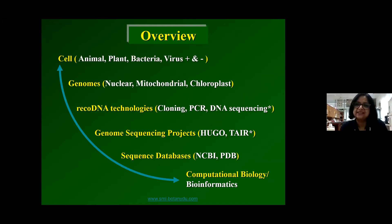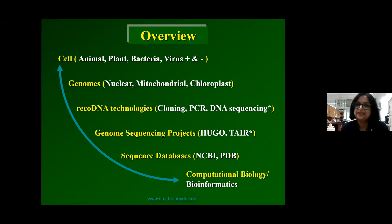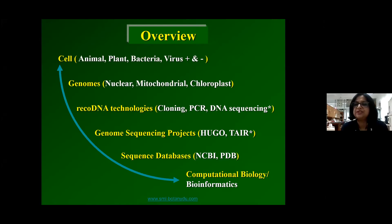Since this is a Herculean task of maintaining this large amount of data, they are organized as genome sequencing projects. The first of such projects which has gone into the annals of history is HUGO, the Human Genome Project, released in 1996. And of course, the classical Arabidopsis information resource, or TAIR.